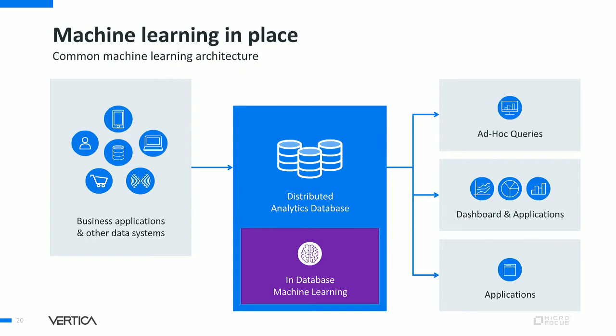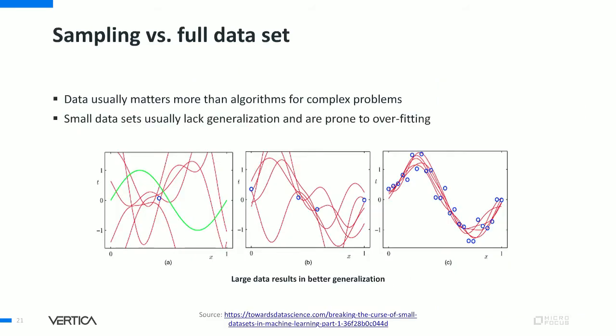One solution is to have machine learning as part of the distributed analytical database itself — you get the benefits of applying ML on all data inside the database without data movement overhead. For use cases where it still makes sense to train models outside, you can do data preparation inside the database, export the prepared data, build your model externally, and then bring that model back into Vertica for ongoing predictions on incoming data.